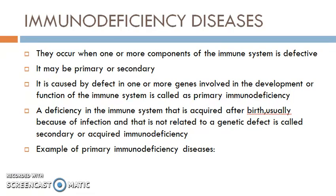Immunodeficiency diseases may be primary or secondary. Primary immunodeficiency is caused by a defect in one or more genes which are involved in the development or function of the immune system.